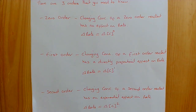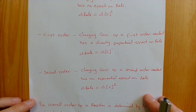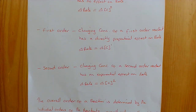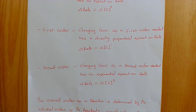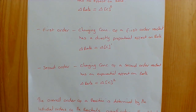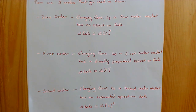First order reactants demonstrate a directly proportional effect on the rate: the change in rate is proportional to the change in concentration to the power one. Finally, second order reactants — when you change the concentration of a second order reactant it has an exponential effect on the rate. If you double the concentration the rate increases by 2 squared, so by a factor of 4. If you triple it, the rate increases by 3 squared, so by a factor of 9.